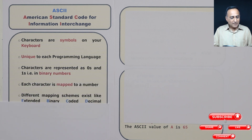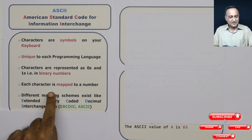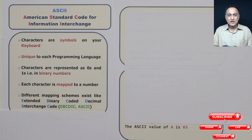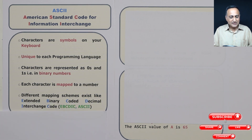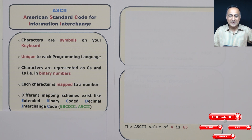Each character is mapped to a number. For example, the decimal value of capital A in the ASCII format is 65, capital B is 66, and so on, all the way till capital Z is 90. Lowercase a starts at 97 in decimal and ends at 122 decimal for small z. The digit 0 starts at 48 and ends at 57 for the number 9.